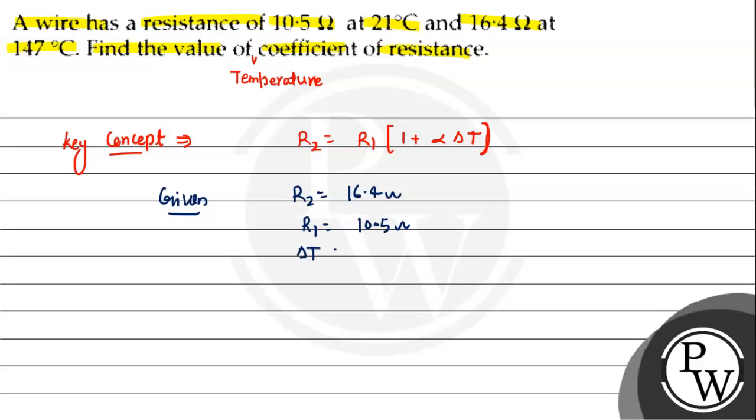So delta T equals 147 minus 21 degrees Celsius. This equals 126 degrees Celsius.